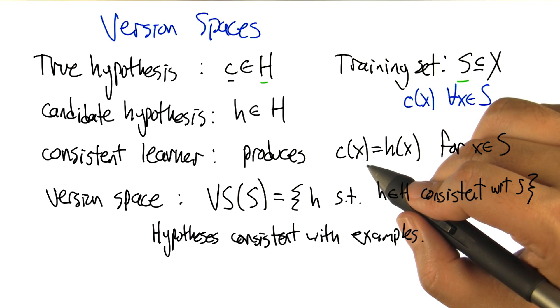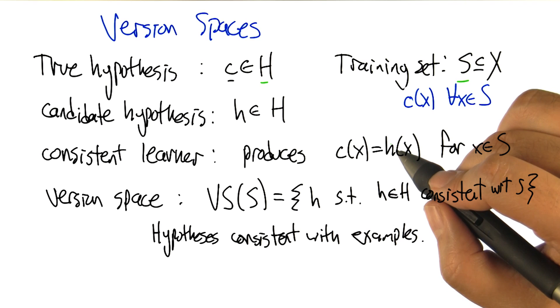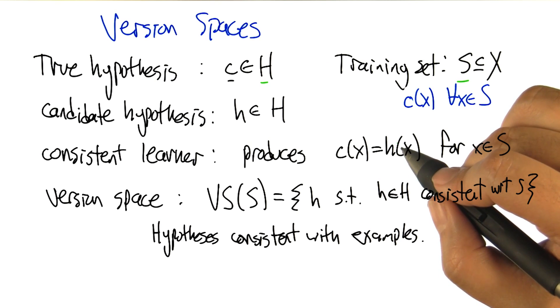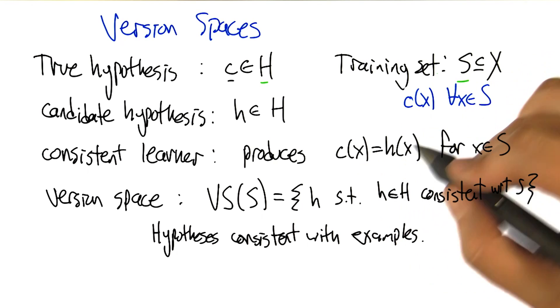Right, so what would be another way of describing what a consistent learner is? A consistent learner can actually learn the hypothesis, or the true concept. Well, it produces, right, I mean of all the possible things it could return, it returns the one that matches the data that it's seen so far. Right, so it's consistent with the data, that makes sense.